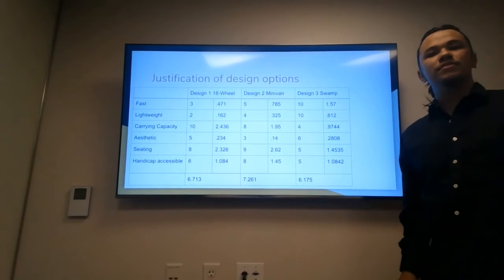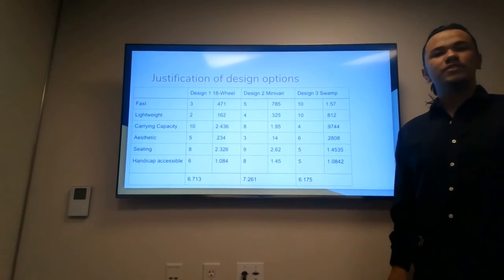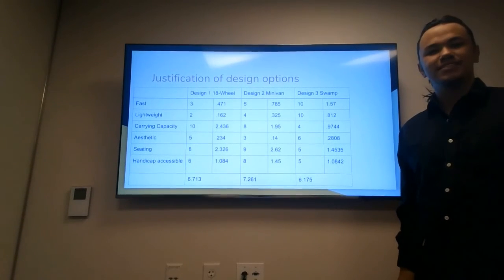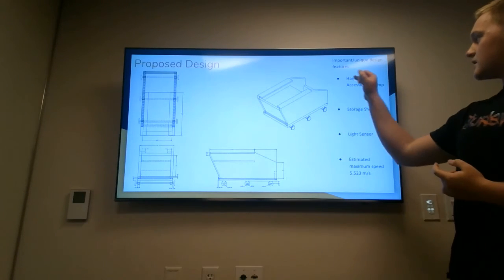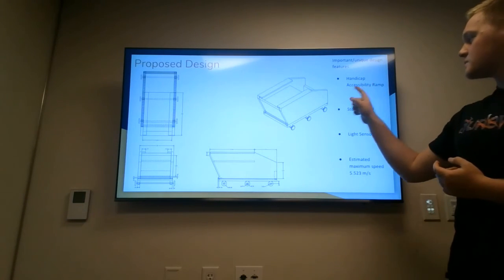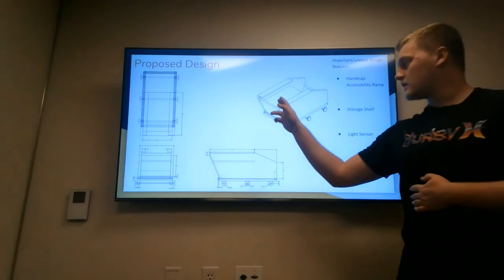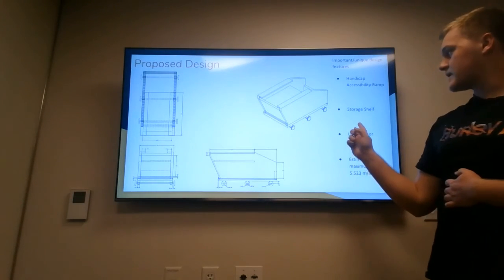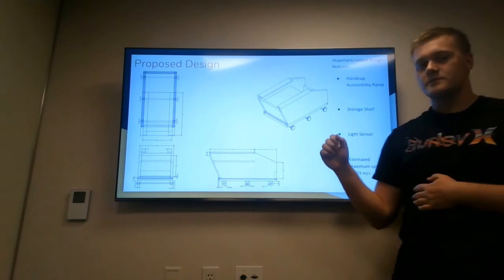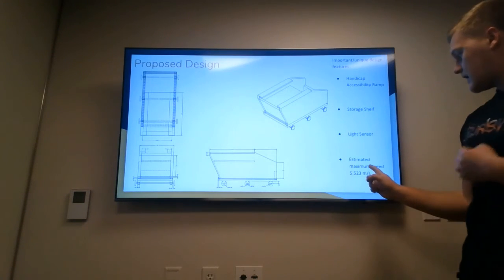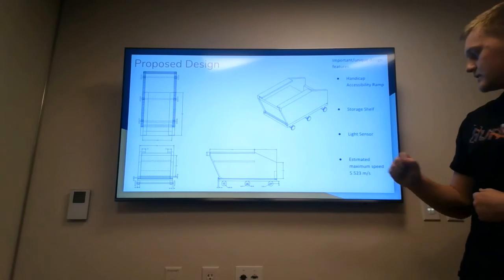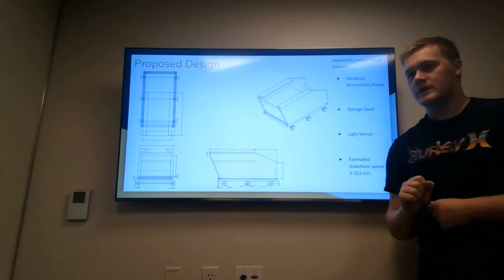So this is our final design. It features a handicap ramp in the back, a storage shelf for all luggage, a light sensor to detect red light to stop when needed, and an estimated maximum speed calculated at about five and a half meters per second.